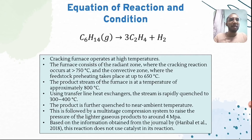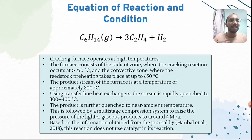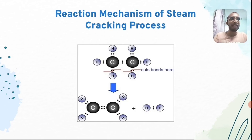The radiant zone operates at 750 degrees Celsius and the convective zone at 650 degrees Celsius. The stream is then rapidly quenched to a temperature of 300 to 400 degrees Celsius, followed by a multi-stage compression system raising the pressure to around 4 megapascals. Based on information from the journal, this reaction does not use any catalyst. This is the reaction mechanism of the general steam cracking process.